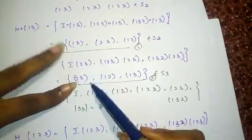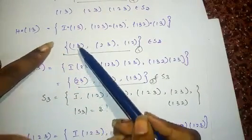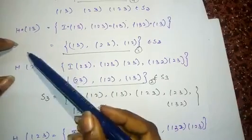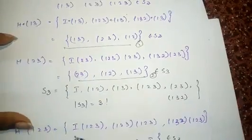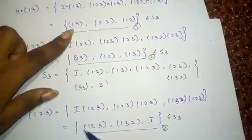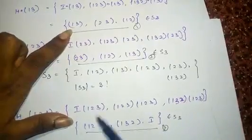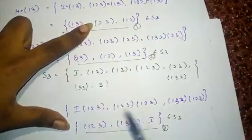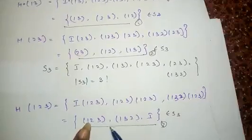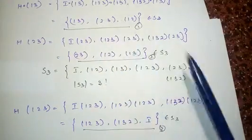Looking at H(1 3) and H(1 2 3): in H(1 3), there is no (1 3) in H(1 2 3), no (2 3), no (1 2). Similarly in H(1 2 3), there is no (1 2 3) in H(1 3), no (1 3 2), and no I. So there are no common elements between H(1 3) and H(1 2 3).